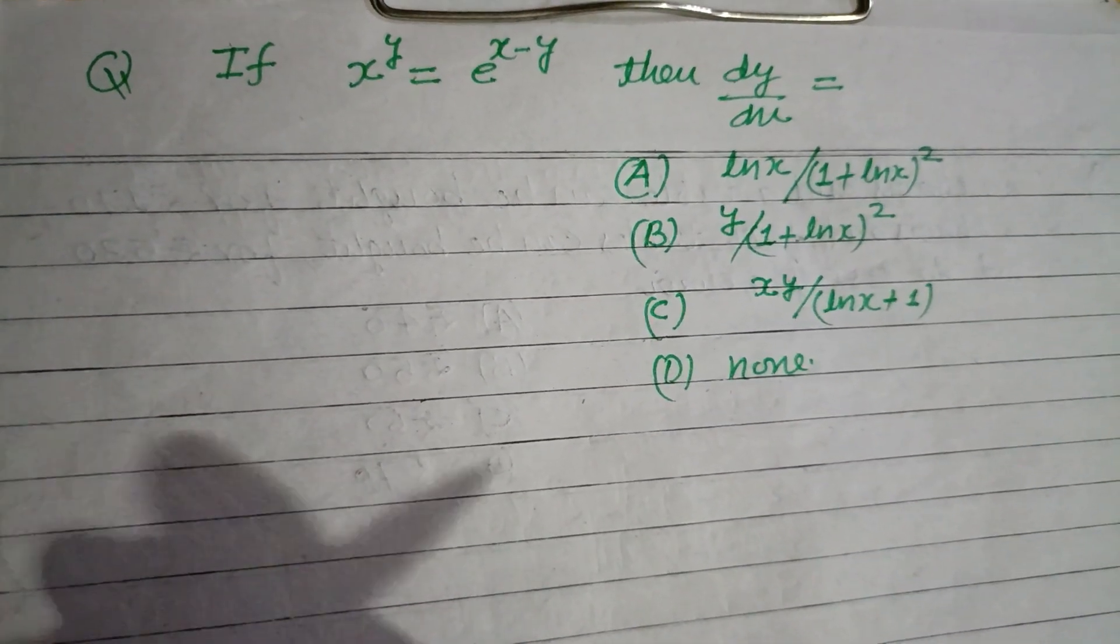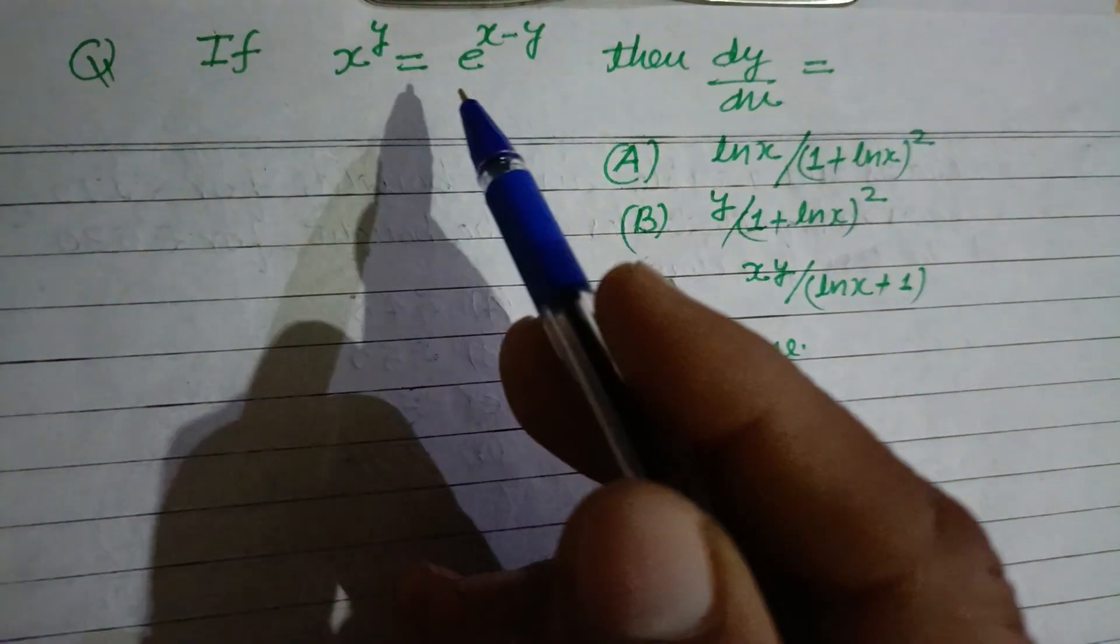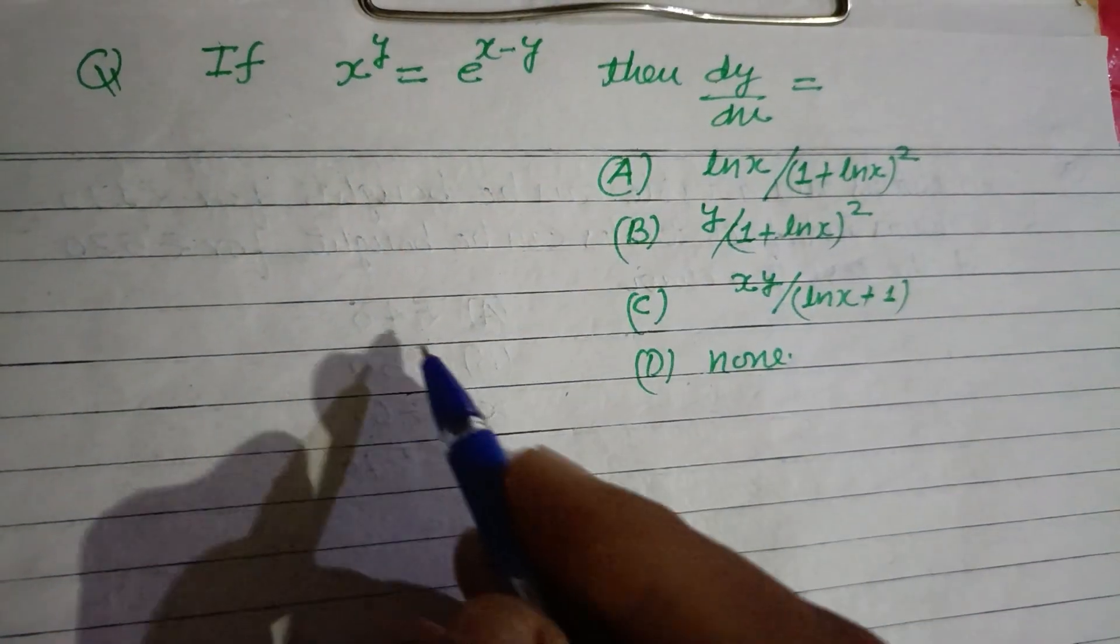Hello viewers, warm welcome to this YouTube channel. This is a question from differentiation from class 12. If x to the power y equals e to the power x minus y, then dy by dx equals?